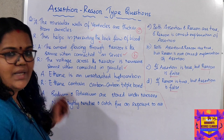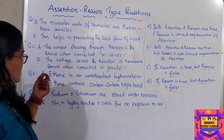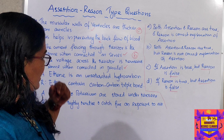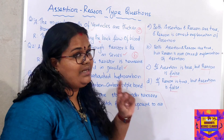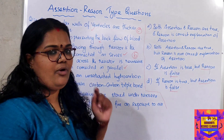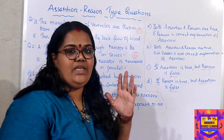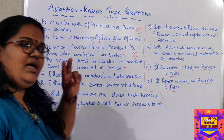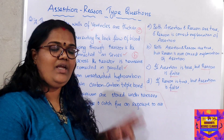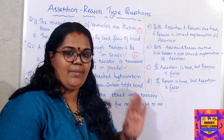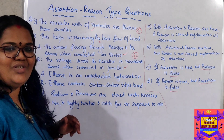I have taken two examples from chemistry. Example three: assertion — ethene is an unsaturated hydrocarbon. Let me think independently. 'Ene' means double bond, 'ane' means single bond, 'yne' means triple bond. So ethene has a double bond — it is an unsaturated hydrocarbon. That is correct. Unsaturated means having double or triple bonds. So the assertion is correct — tick.